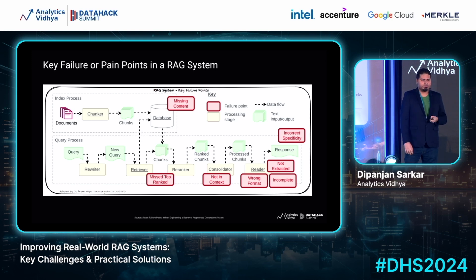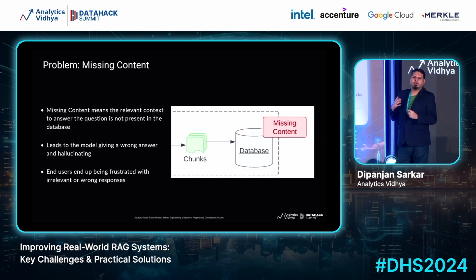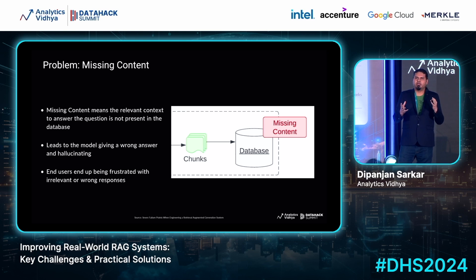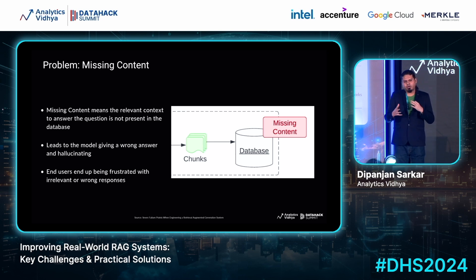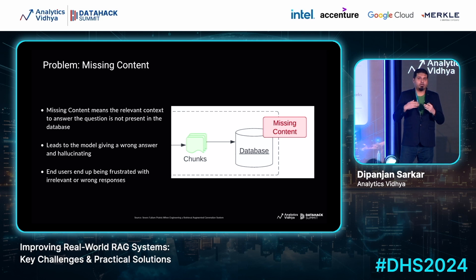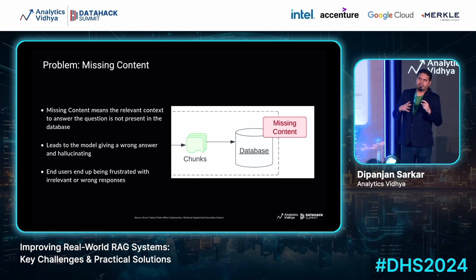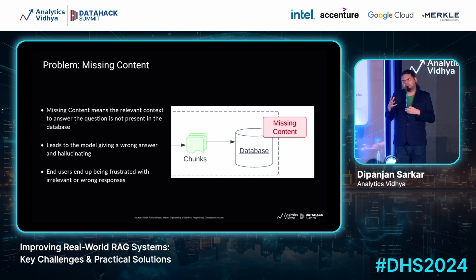Let's talk about the first one, which is missing content. Missing content basically means that you ask a question to the RAG system, but unfortunately you don't have relevant documents to answer that question. This can often lead to the model giving a wrong answer, and worse, giving a confidently wrong answer — which is a hallucination. Users can end up being frustrated with irrelevant or wrong responses. So how do we tackle the problem where we don't have relevant information but want to stop the model from hallucinating?